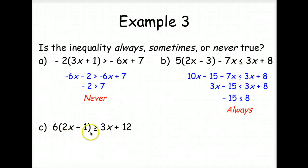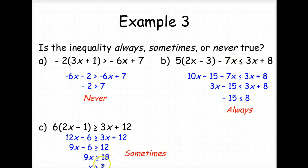And finally, let's look at this one. Again, we use the distributive property. So we have 12x minus 6 is greater than or equal to 3x plus 12. If we subtract 3x from both sides, add 6 to both sides, now divide both sides by 9, x greater than 2. Is x always greater than 2? Sometimes. But if x is equal to 1, it won't be greater than 2. So the answer to that one is sometimes.